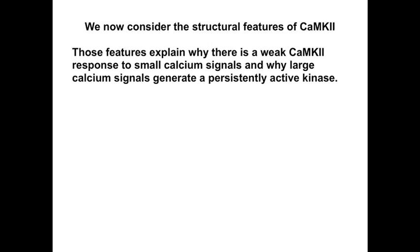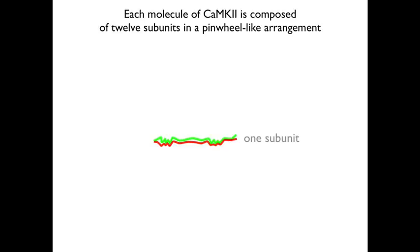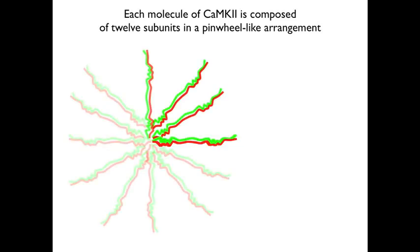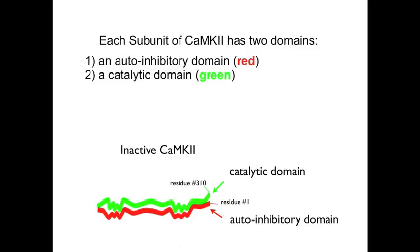We're now going to consider the structural features of CAM kinase 2, because those features explain why there is a weak CAM kinase 2 response to small calcium signals and why large calcium signals generate a persistently active kinase. Each molecule of CAM kinase 2 is composed of 12 subunits in a pinwheel-like arrangement. Each subunit has two domains: an autoinhibitory domain shown in red and a catalytic domain shown in green.